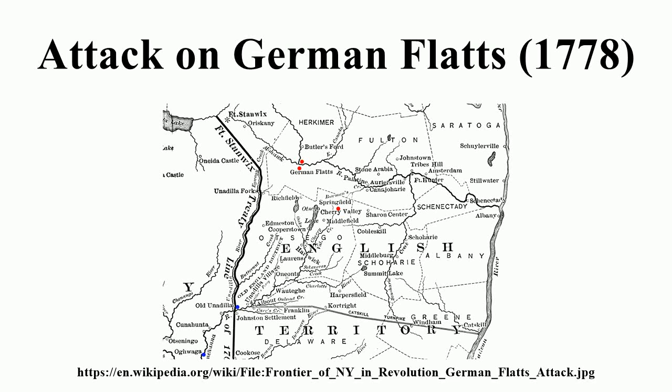The attack on German Flats was a raid on the frontier settlement of German Flats, New York during the American Revolutionary War. The attack was made by a mixed force of Loyalists and Iroquois under the overall command of Mohawk leader Joseph Brandt, and resulted in the destruction of houses, barns and crops, and the taking of livestock for the raiders' use. The settlers, warned by the heroic run of Adam Helmer, took refuge in local forts but were too militarily weak to stop the raiders.